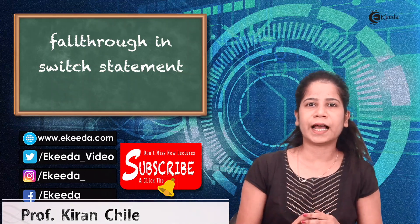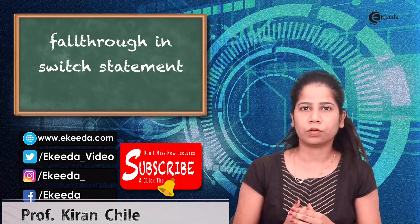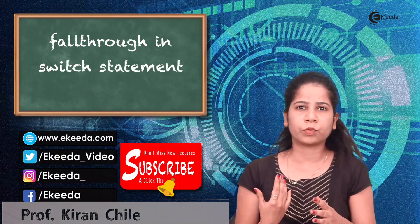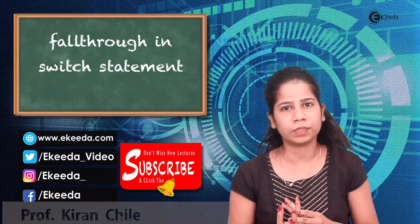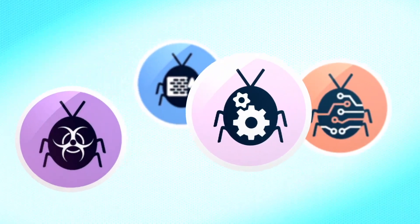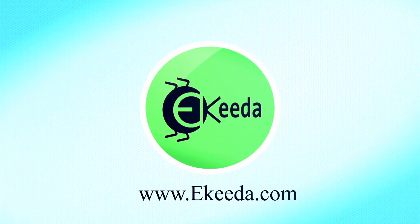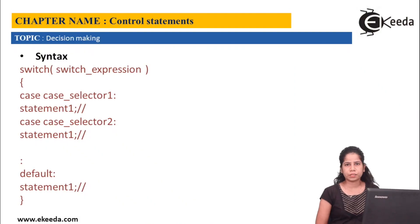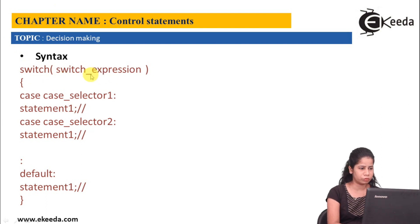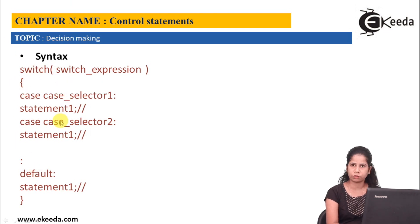This particular concept is definitely having some real-time applications and it is useful for us. Let's see the syntax and the program of fall through in the switch statement. Here we have the syntactical representation of fall through in switch statement. Here we have a switch statement — switch is a keyword — taking a switch expression which is the exact value, and inside curly braces you have different cases and a default statement.